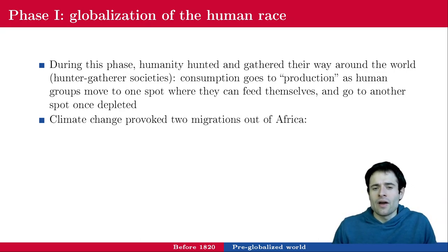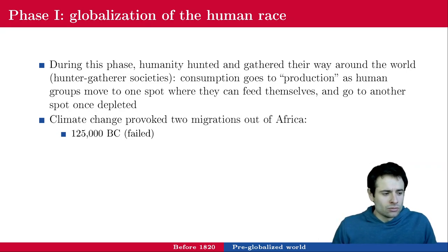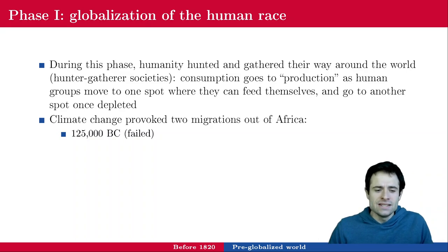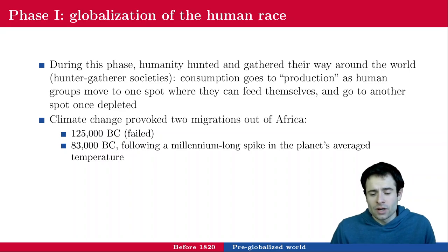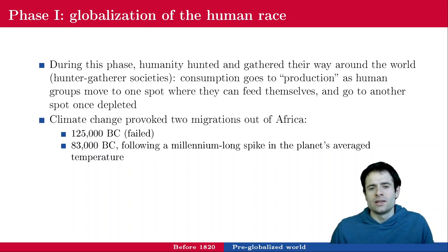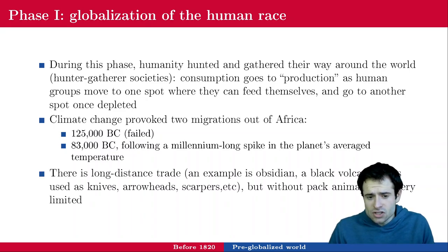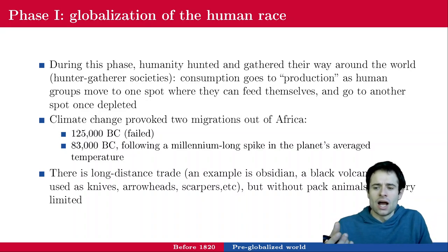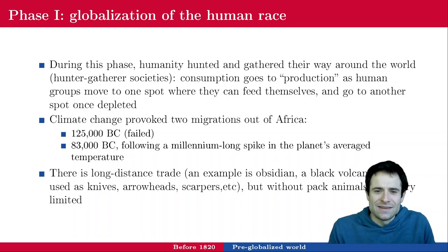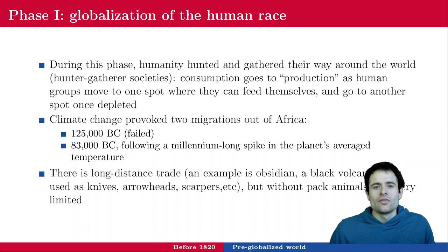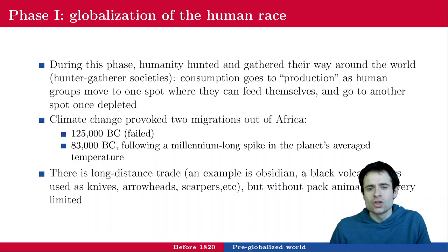Climate change provoked two migrations out of Africa. Those things are estimates — not something to remember by heart. In 83,000 BC, there was a millennium-long spike in the planet's average temperature that allowed humanity to migrate. There is long-distance trade already — an example is obsidian, a black volcanic glass, which allowed humanity to build weapons to hunt. But there are no pack animals — no mules, donkeys, cows — to carry large amounts of resources over long distances. So this trade is very limited.